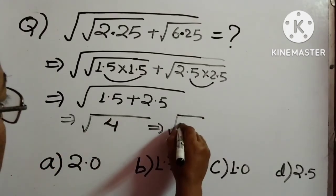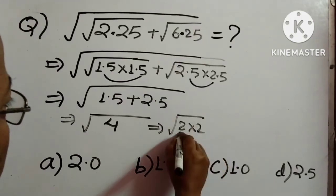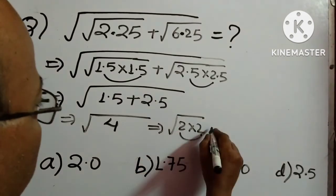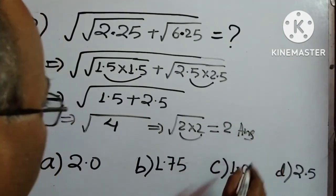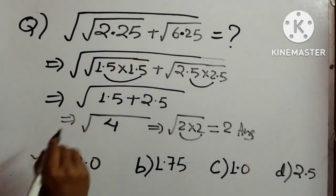So 4 is 2 into 2. So as it is a square root, 2 will come outside. So it will be 2. So 2 is the answer which is option A.